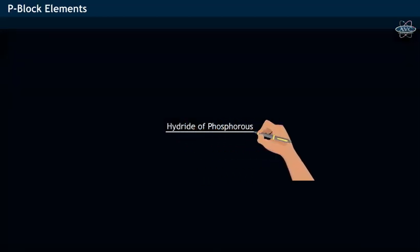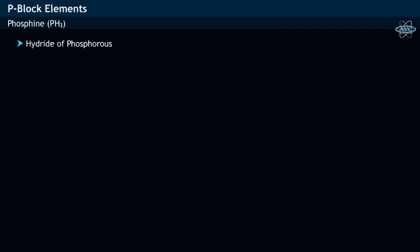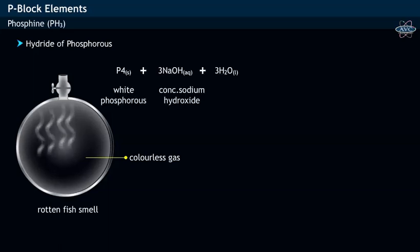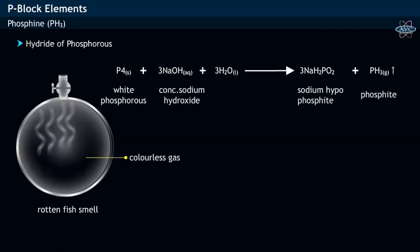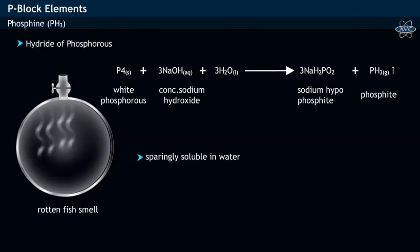Hydrides of phosphorus: phosphine, with molecular formula PH₃, is a hydride of phosphorus. Phosphine is a colorless gas with a rotten fish smell. Phosphine is prepared by treating white phosphorus with concentrated sodium hydroxide solution in the atmosphere of carbon dioxide gas, which gives rise to the products phosphine along with sodium hydrogen phosphide (NaH₂PO₂).